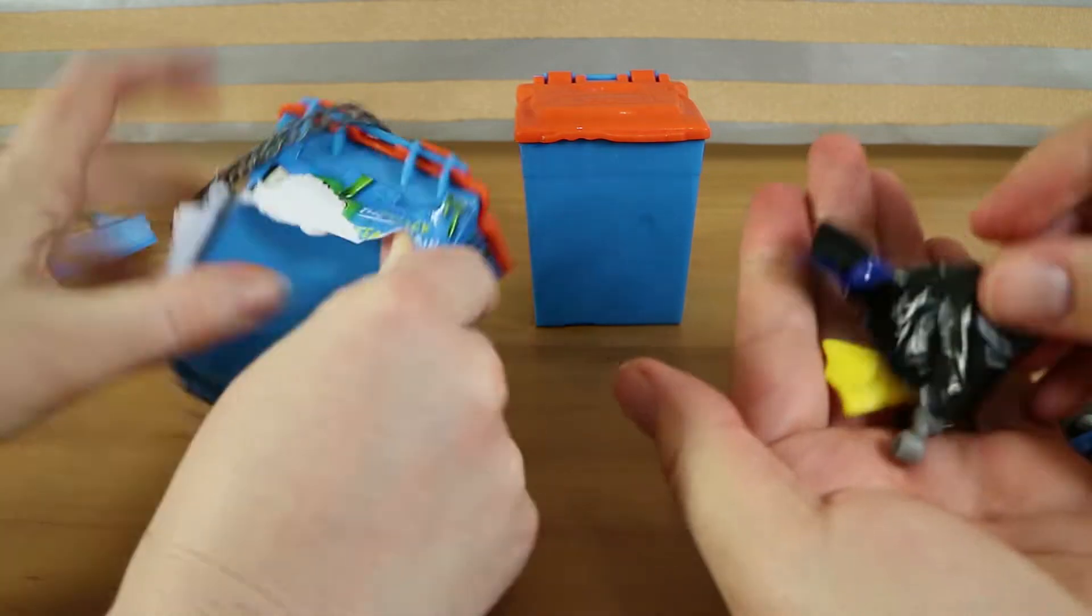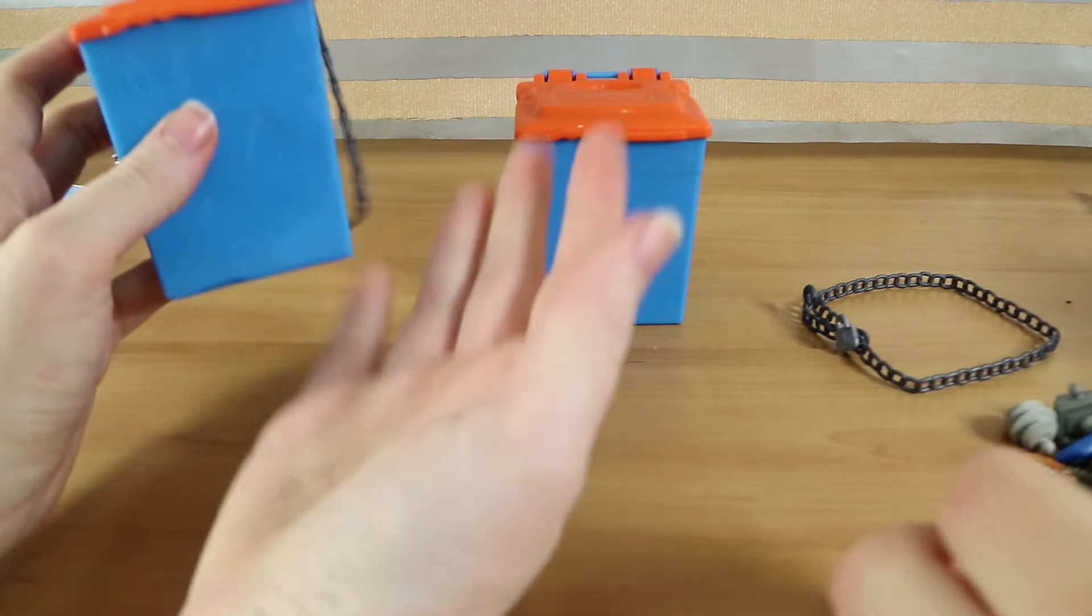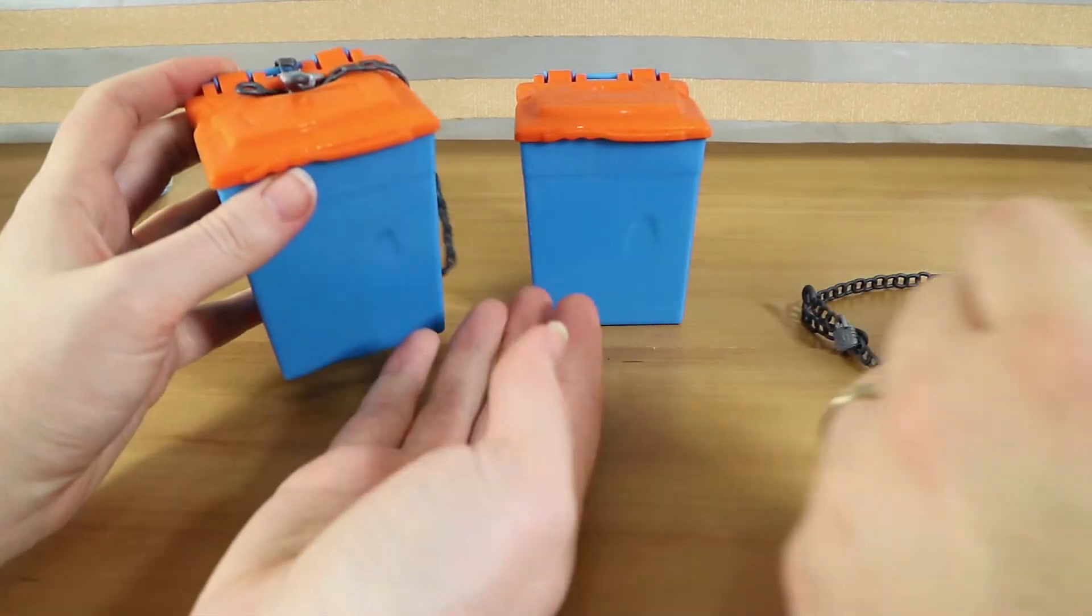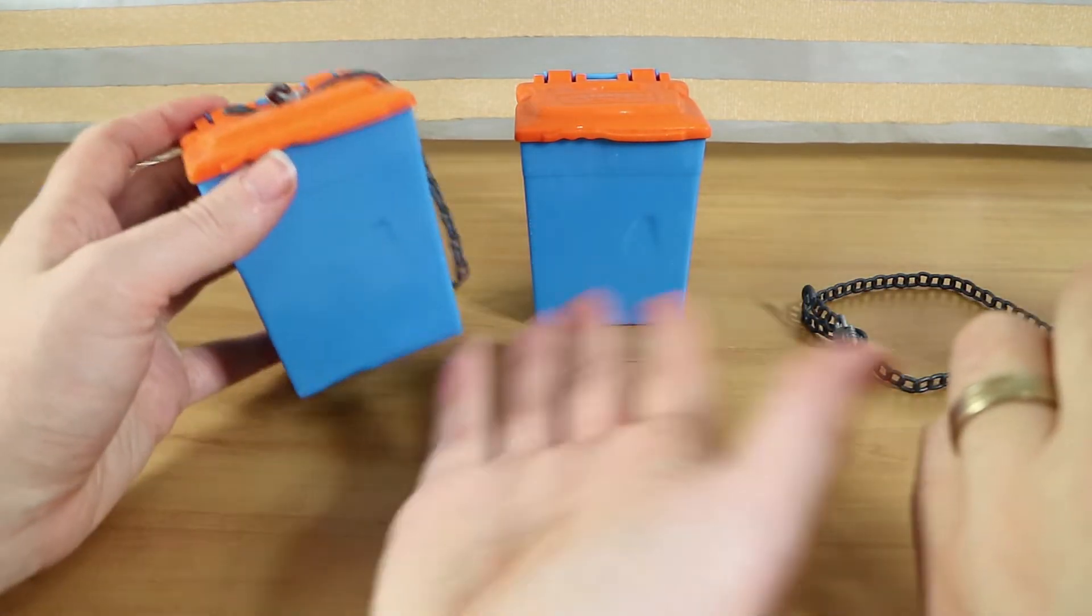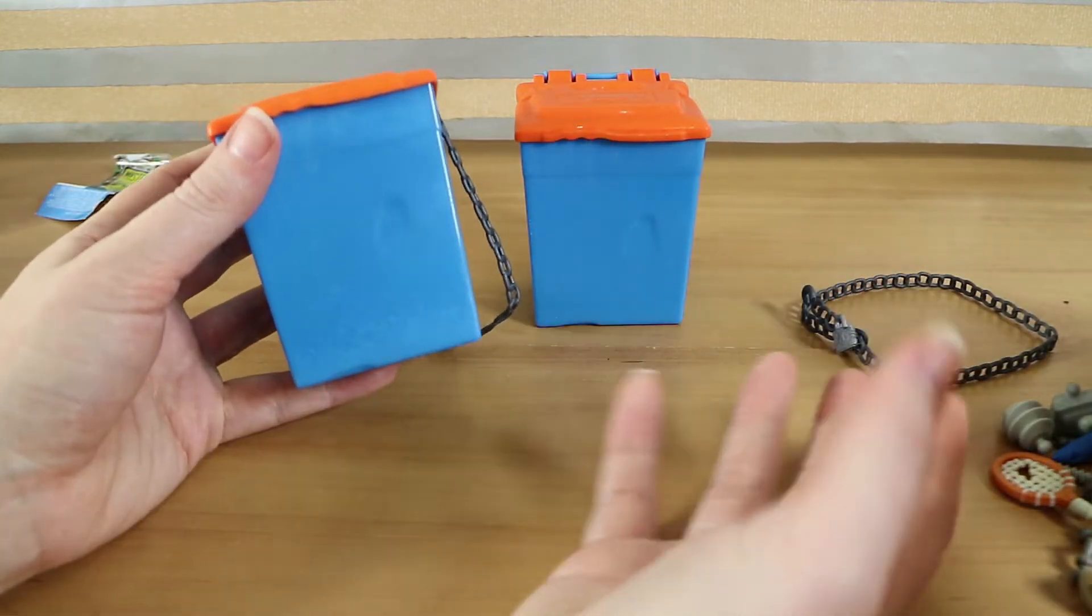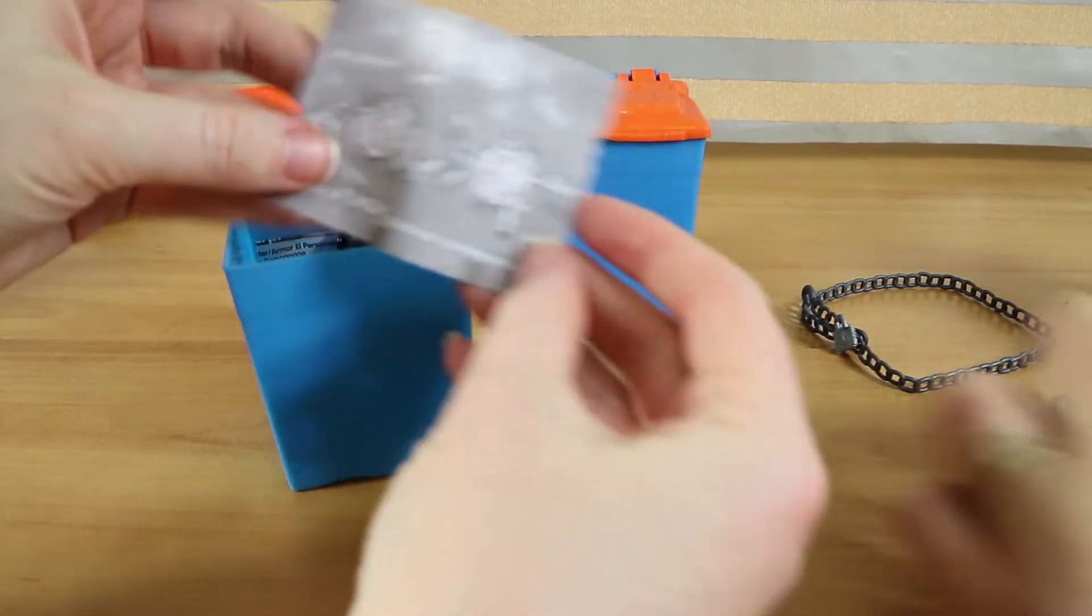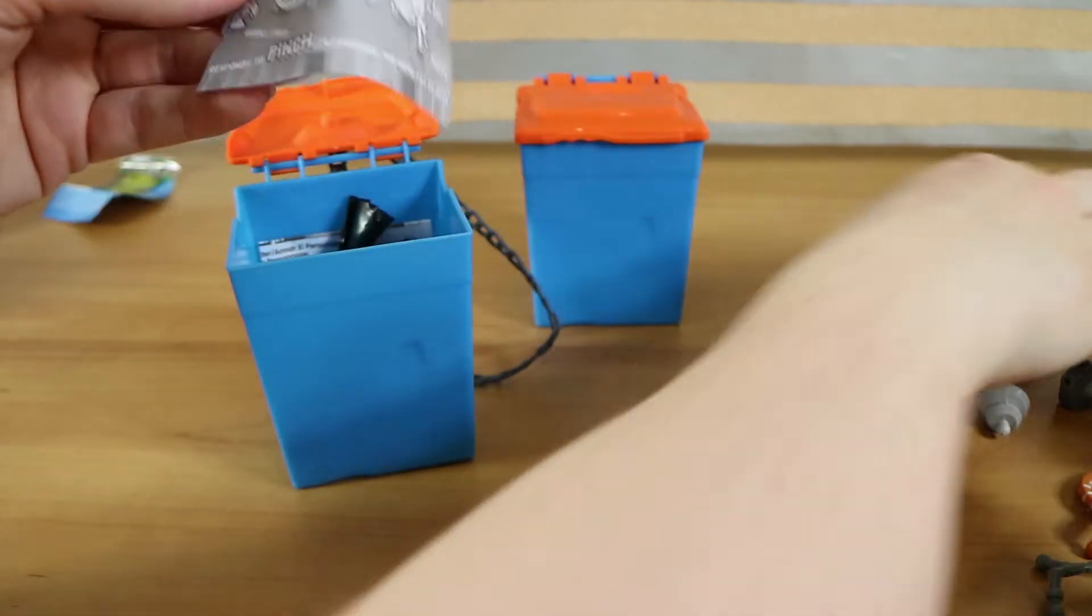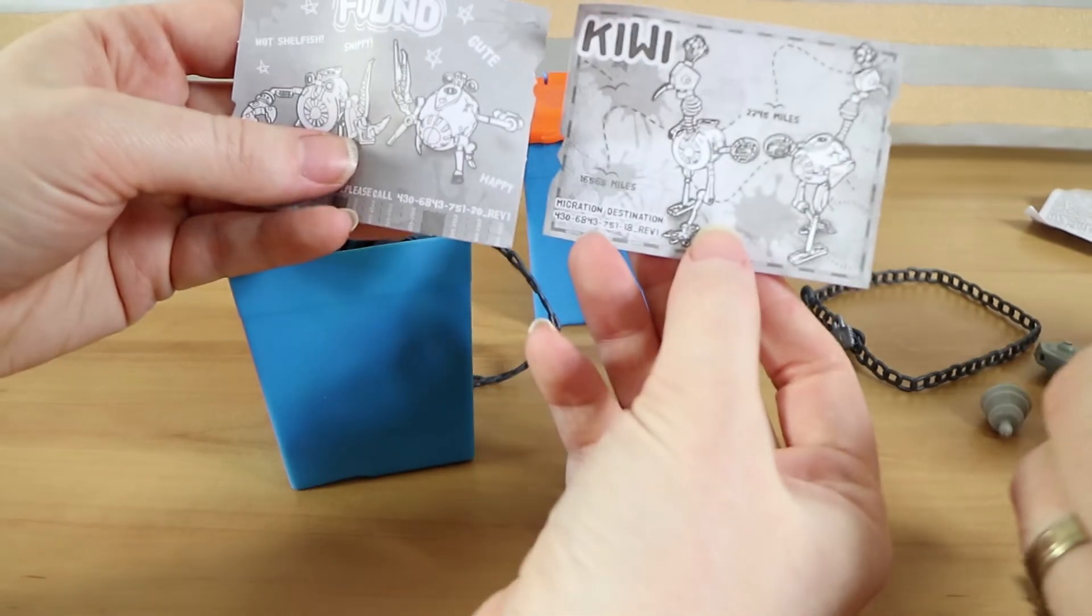And more trash. So the actual bots don't have too many pieces. Also if you're familiar with hex bugs normally they have a switch and they turn on, they kind of go and move. These do not do that. They're just figures that happen to be part of the hex bug kind of realm I guess. Well mine's right on top we can see found. So you got Kiwi I got found.